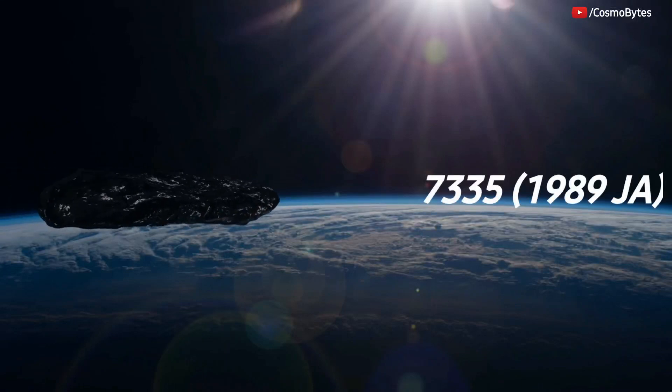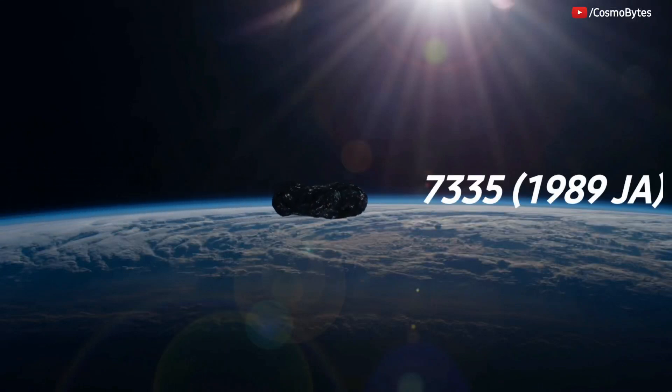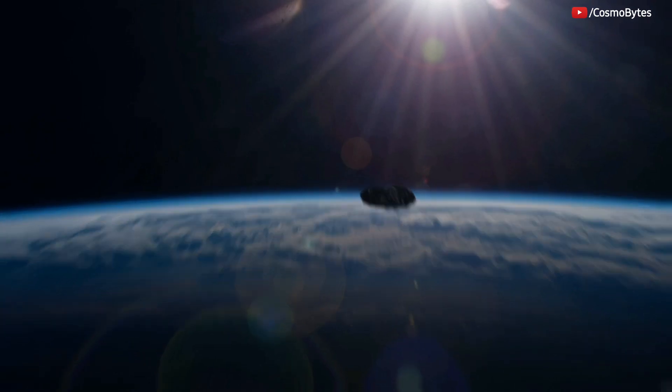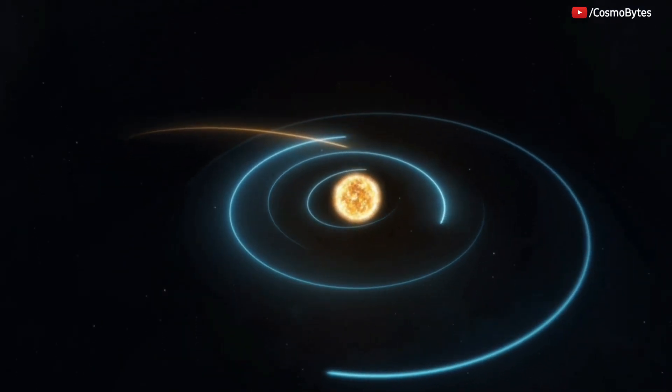Asteroid 7335, 1989 JA, is an Apollo-class asteroid whose orbit crosses the orbit of Earth.